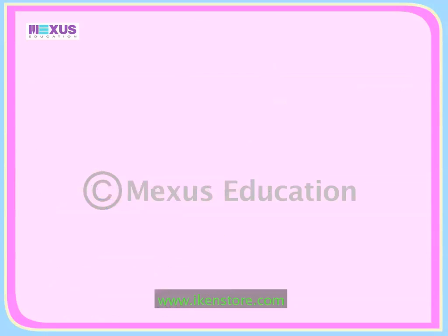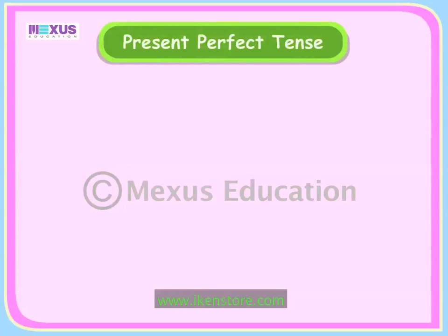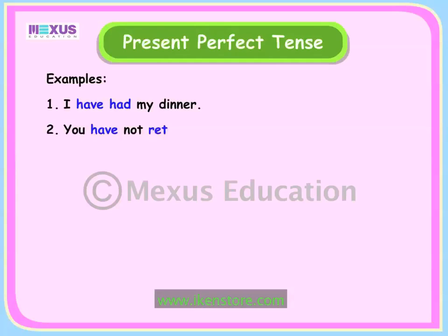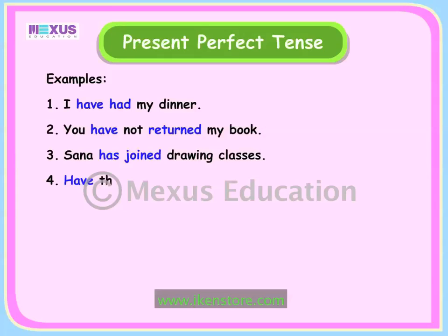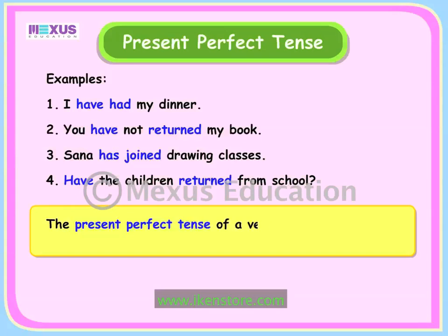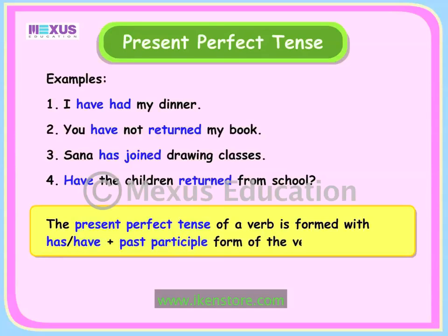In this lesson, we shall learn about the present perfect tense and its uses. Look at the following examples using the present perfect tense: 'I have had my dinner.' 'You have not returned my book.' 'Sana has joined drawing classes.' 'Have the children returned from school?' The verbs in the present perfect tense have been highlighted. From the above examples, we can observe that the present perfect tense of a verb is formed with the help of 'has' or 'have' and the past participle form of the verb.